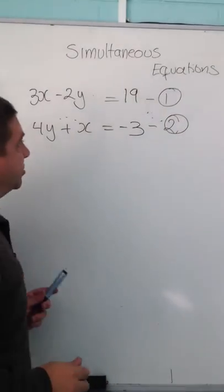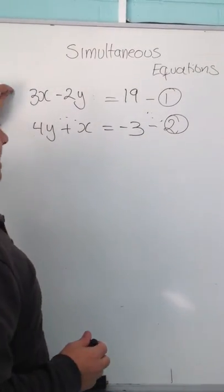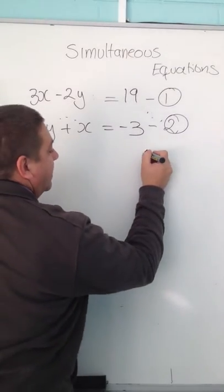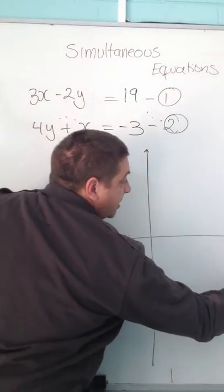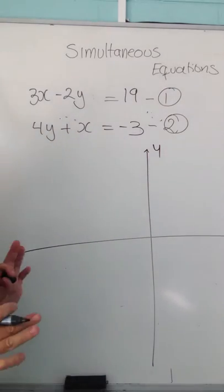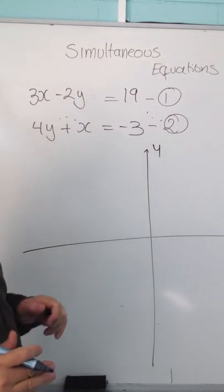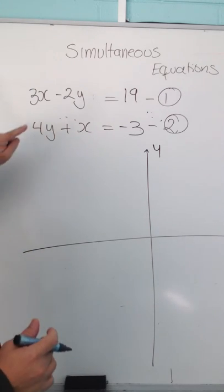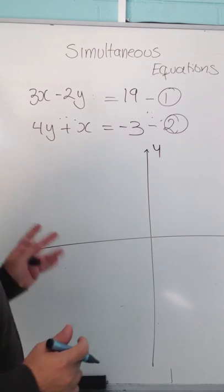What I'll get you to do is to actually sketch these two lines in the axes that I'm drawing up here. Sketch those two lines and tell me where you think the X and the Y crossing will be. In other words, if I look at this line, sketch it — what will it look like?